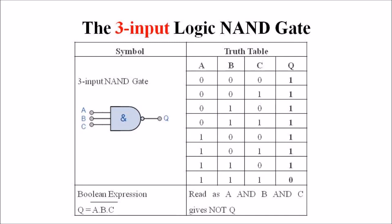From the truth table: 0·0·0 gives 1, 0·0·1 gives 1, 0·1·0 gives 1, 0·1·1 gives 1, 1·0·0 gives 1, 1·0·1 gives 1, 1·1·0 gives 1, and 1·1·1 gives 0. It is clear that if any one of the inputs is 0 then the output results in high or 1, and if all inputs are 1 then the output is always 0. This truth table is just the reverse or inverse of the truth table of the AND gate.